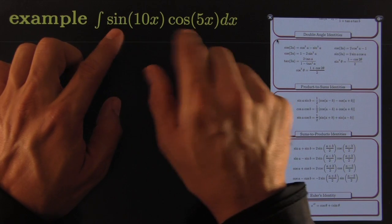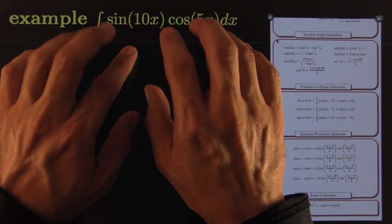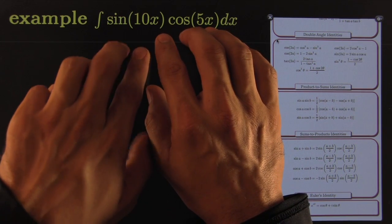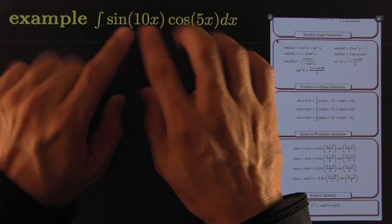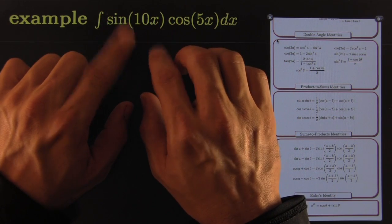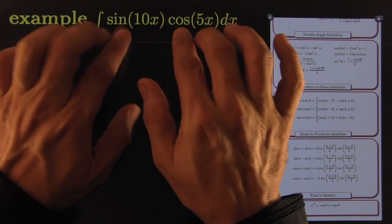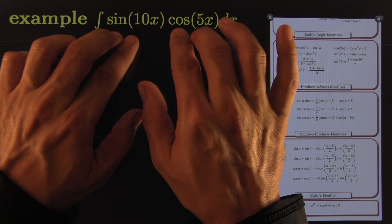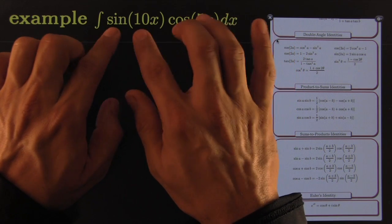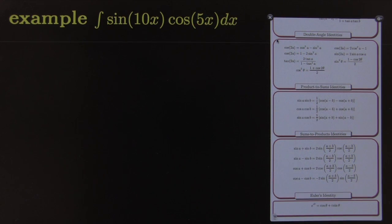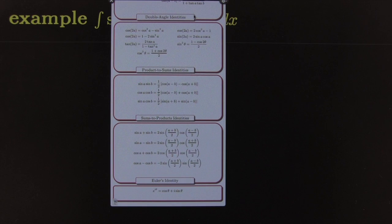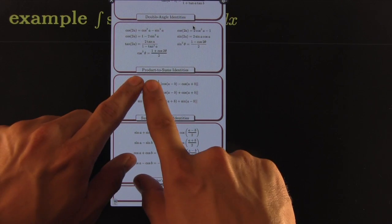The integral of the sum would be sum of the integrals when each exists and is nicely behaved, but the product you can't just split up like that. Wouldn't it be nice if we could turn this product of two functions into a sum? Of course we have a paragraph on most identity sheets where it says products to sums.